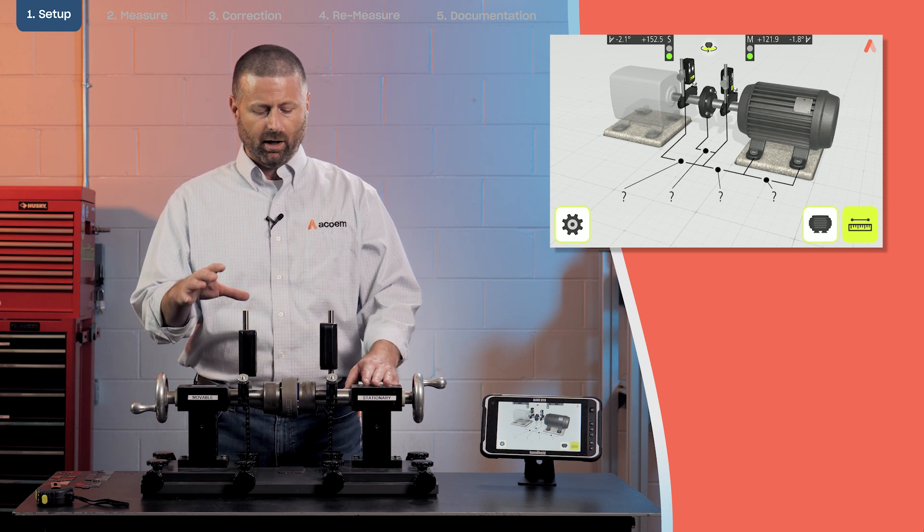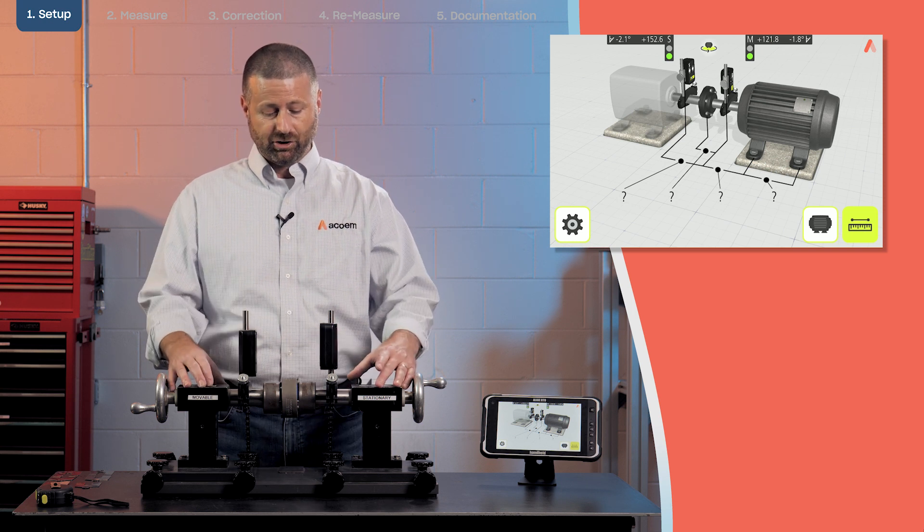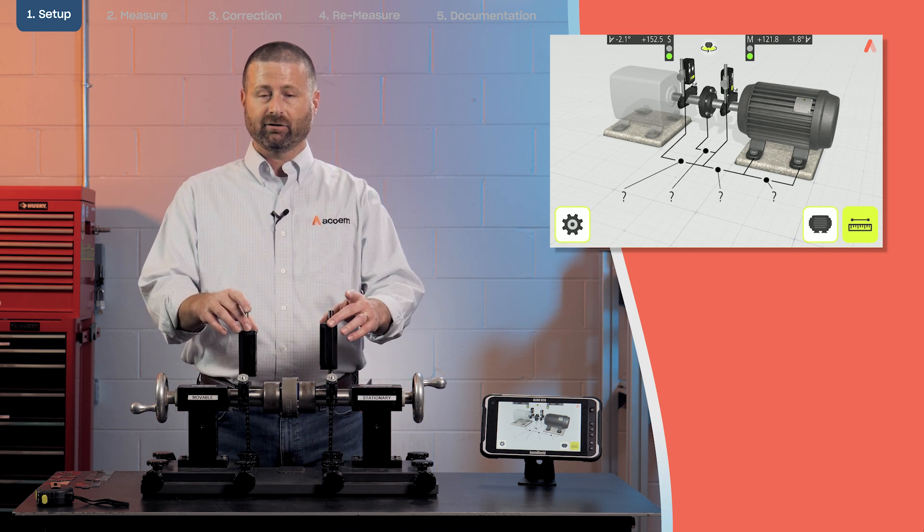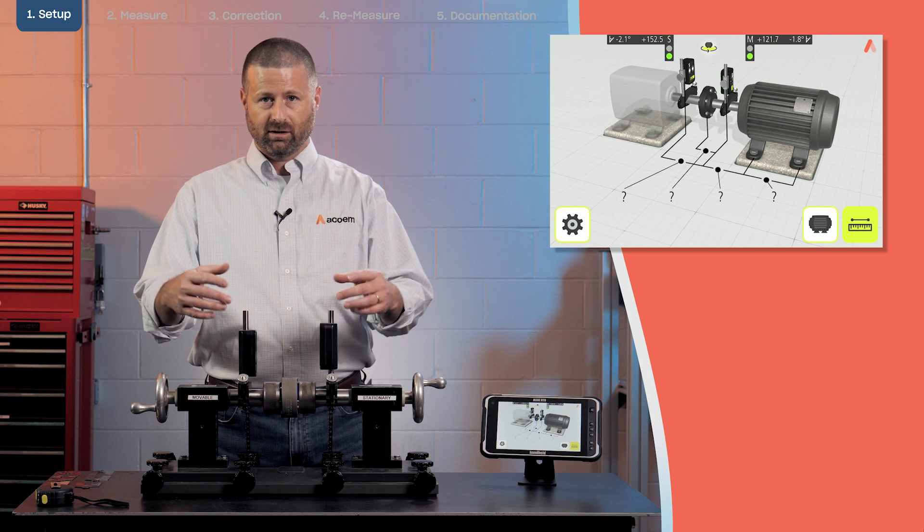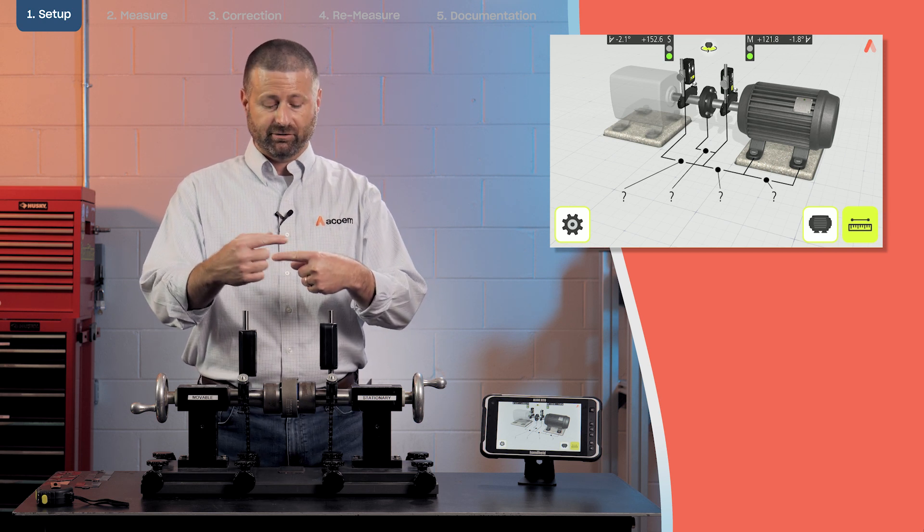In the setup we have the chain brackets on the shafts and then we have a laser on each sensor shooting at the other side. So this is a dual laser system.